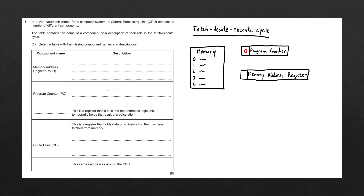The program counter holds the address of the next instruction to be processed. It then sends this address to the memory address register, which is the next special register within the CPU and holds an address. The memory address register sends this address over to main memory, which reads the instruction at that address — address zero. This connection is known as the address bus.